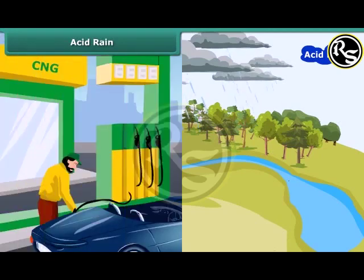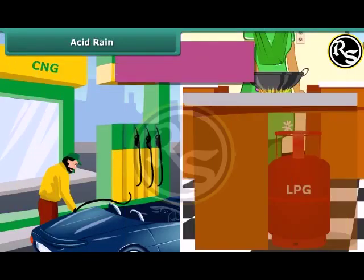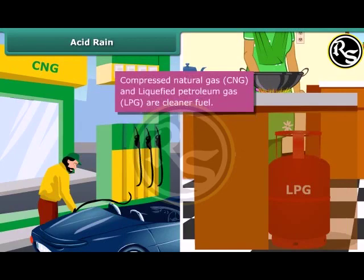What can reduce acid rain? Use of clean fuels like compressed natural gas, CNG, and liquefied petroleum gas, LPG, can reduce the acidity of rain.